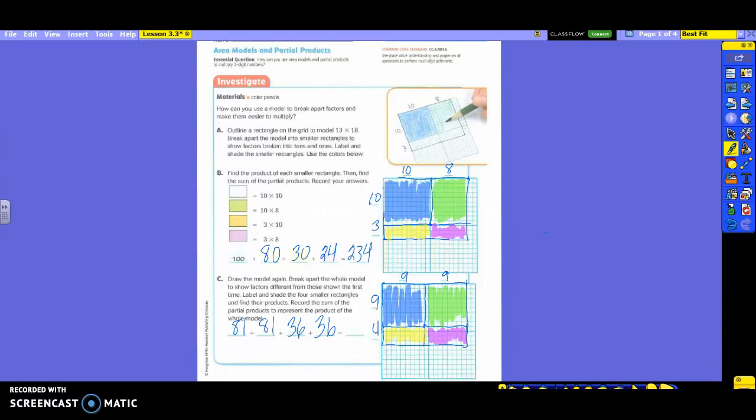Now you need to add all those up. So if you are somebody that needs to do that, you can write it over here on the side where you have some space and get the total. You can tell me what you got. Cheyenne, what'd you end up with? 234. It should be exactly the same as the top one because we used the exact same model to start with. We just split it up differently. So that is how you will break apart one of your models into partial products.